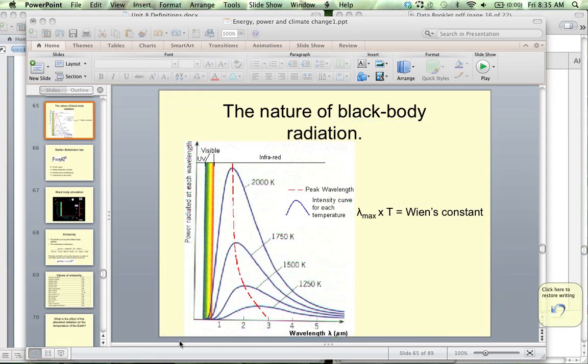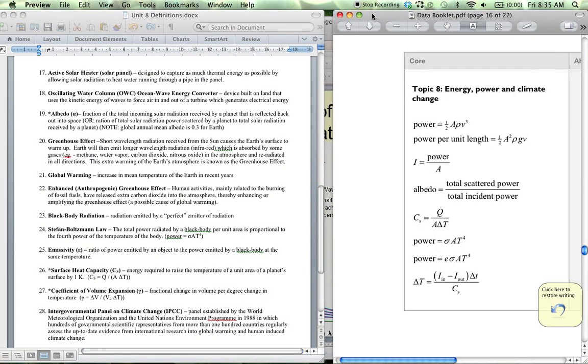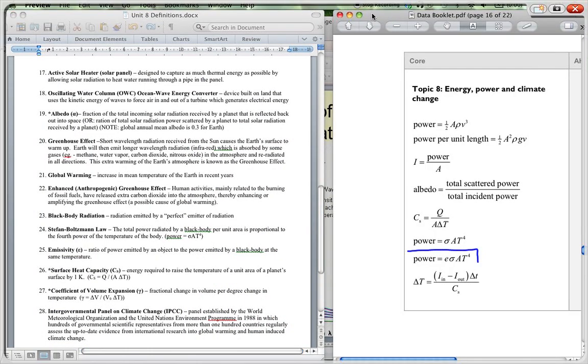Now coming back to this formula over here, we see this formula is very similar to this, it's a variation on that, but we've got the small e here and that is the emissivity, that is the emissivity of, and over here we have the definition of it.